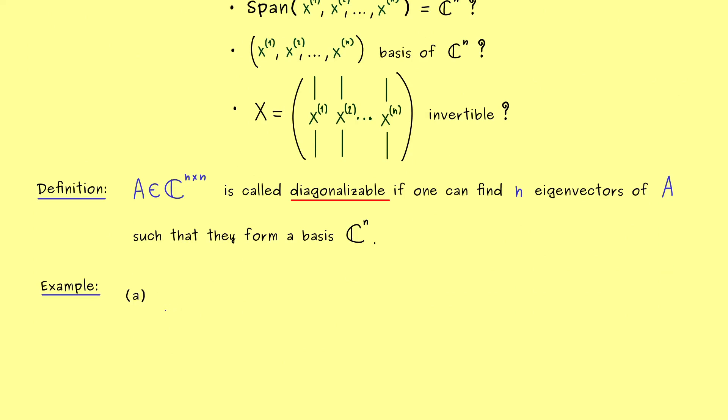There we have it, this is the definition of a diagonalizable matrix. And of course, after a definition, we should immediately check for some examples. Indeed, we already know that not every matrix is diagonalizable. However, let's first start with a positive example. And in fact, the easiest one would be a diagonal matrix.